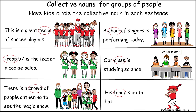Our third sentence: 'There is a crowd of people gathering to see the magic show' — crowd is the collective noun. In the next column: 'A choir of singers is performing today' — choir is the collective noun. 'Our class is studying science' — class is the collective noun. And in our last sentence, 'His team is up to bat' — team is the collective noun.